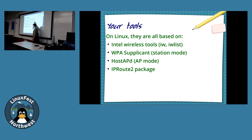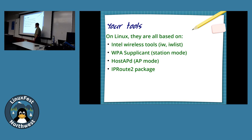All your wireless tools on your Android phones and NASes and half your access points are all based around open source packages. You've got your Intel wireless tools for determining what your radio is doing. WPA supplicant negotiates authentication with your AP. Your access point is probably running hostapd, and all of your packets are going through routes set up by IP Route 2.